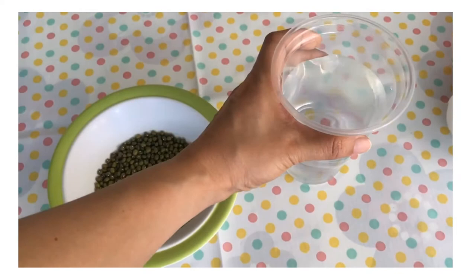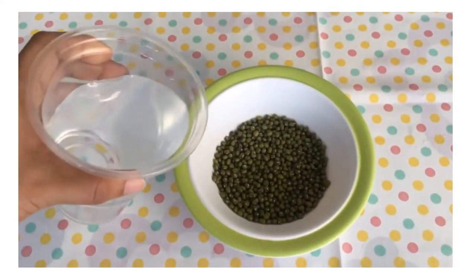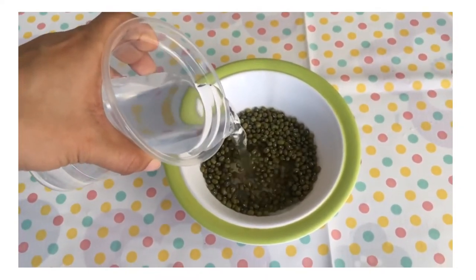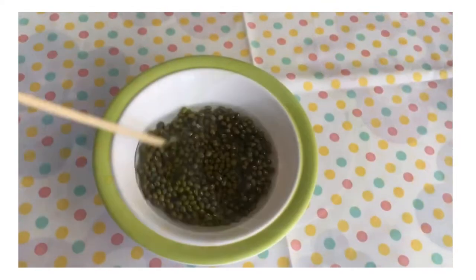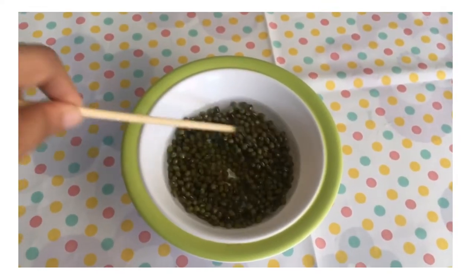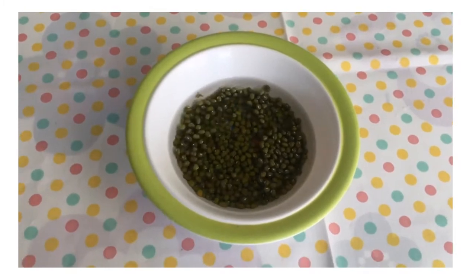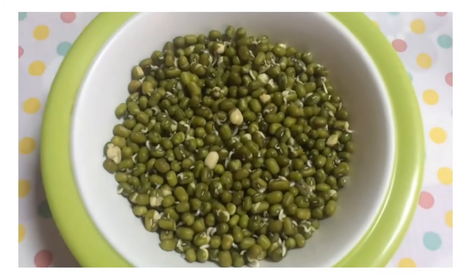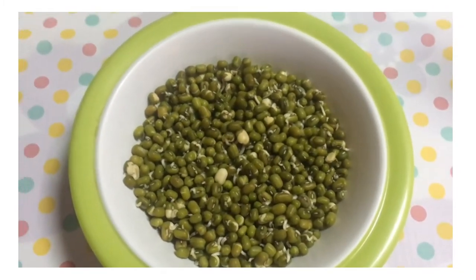Step 1: Soak mung bean seeds in a bowl of water overnight. You need to do this in advance. On the next day, the mung bean seeds will look like this.